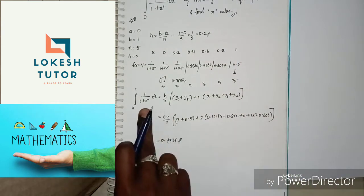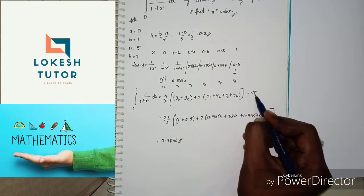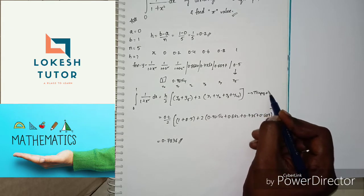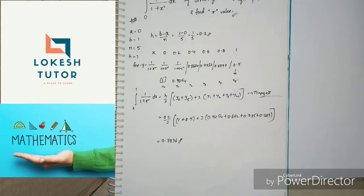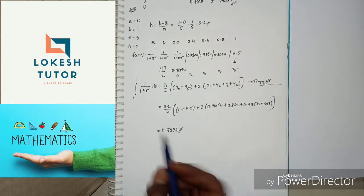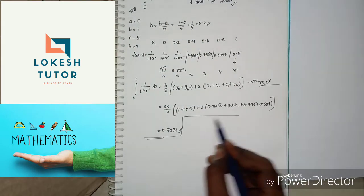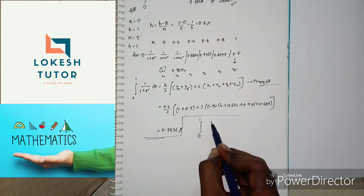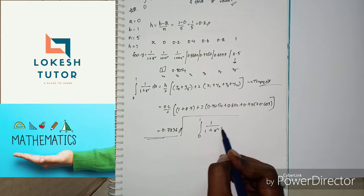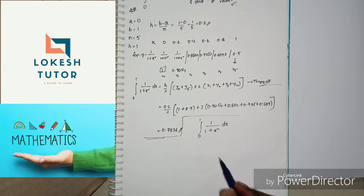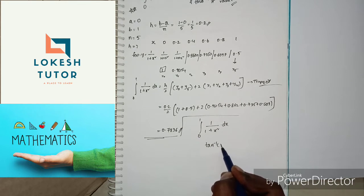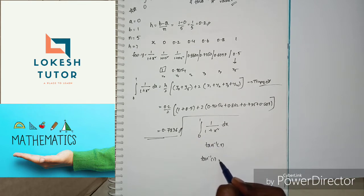Next, we find the actual (exact) value. The integral from 0 to 1 of 1 by 1 plus x squared has the integration formula tan inverse of x.